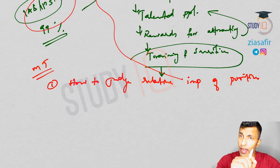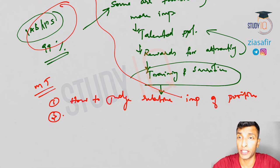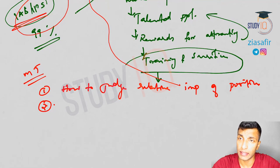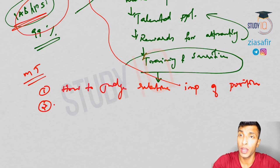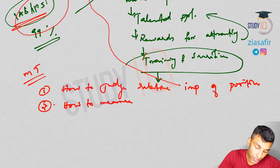Secondly, what Melvin Tumin says is there is no effective method for measurement of talent. You are saying talented people are required, but how can you measure the talent of people? For example, is the IAS/IPS exam actually measuring the talent of the people? We can't say that. Is the CAT exam the only way to understand the talent of people? No. So there is no effective measure for measuring the talent of people — that is again a question raised by Tumin.